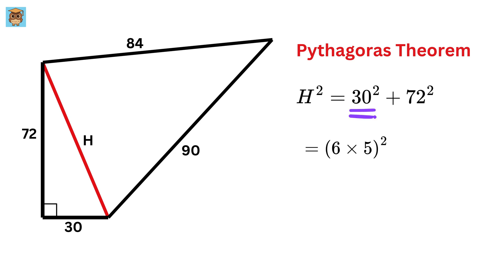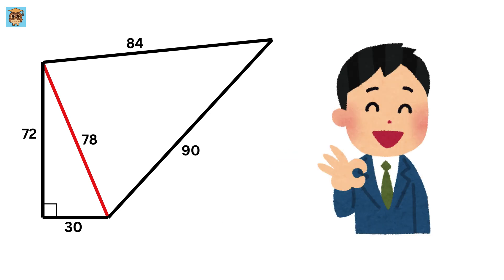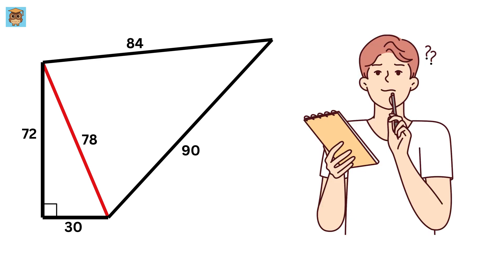Then we have h squared equals 30 squared plus 72 squared. Now to make it simpler, we can rewrite 30 as 6 times 5 whole squared and 72 as 6 times 12 whole squared. So it will become 6 squared times 5 squared plus 6 squared times 12 squared. Now take 6 squared as common to make it 6 squared times 5 squared plus 12 squared. This will become 25 plus 144 or 169, which is 13 squared. Thus h squared equals 6 times 13 whole squared or 78 squared. Therefore h equals 78.